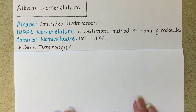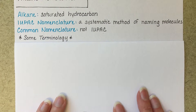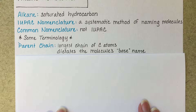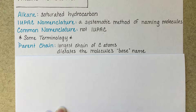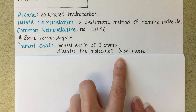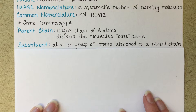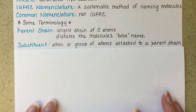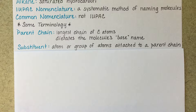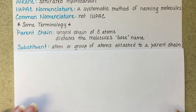Before I get into the actual process of naming alkanes, there's a few words that I want to define for you. First of all, in nomenclature, we're going to be always looking for the parent chain in a molecule, which is defined as the longest continuous chain of carbon atoms. The parent chain dictates the molecule's base name. We're also going to be identifying substituents, which are an atom or a group of atoms that are attached to the parent chain. This does not include hydrogen — hydrogen is never a substituent — but this would be something like a halogen, chlorine or bromine, or maybe some carbons that are coming off of the parent chain.